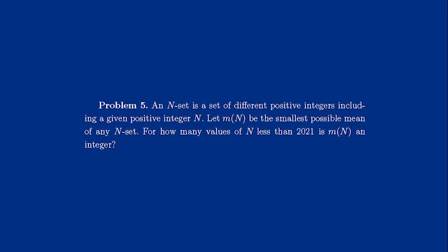Problem five. An n-set is a set of different positive integers, including a given positive integer n. Let m of n be the smallest possible mean of any n-set. So how many values of n less than 2021 is m of n an integer?